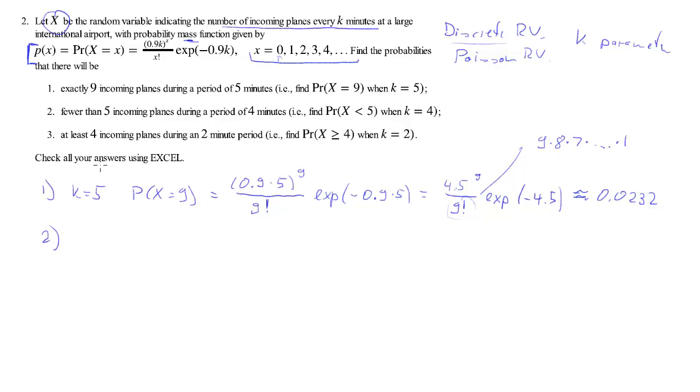Part 2. Fewer than 5 incoming planes. What's the probability of having fewer than 5 incoming planes during 4 minutes? So firstly k here is 4. Fewer than 5 incoming planes means what we want is the probability of x smaller than 5, which is the same as the probability of x being 0 plus the probability of x being 1 plus and so forth all the way to plus the probability that x equals 4.